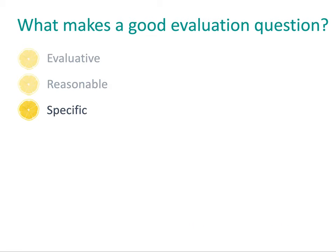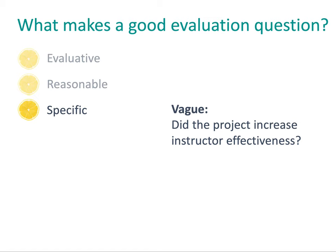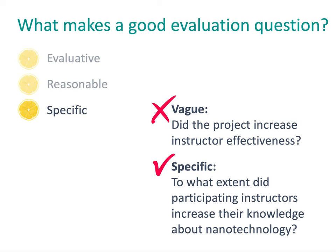Third, good evaluation questions should be specific. Questions should clearly identify what will be investigated in the evaluation. For example, if an evaluation question asks, 'Did the project increase instructor effectiveness?' we're left asking what instructor effectiveness means and how it's defined. We don't want vague questions stated in overly broad terms, as this introduces unnecessary confusion into an evaluation. Instead, we could be more specific and ask, 'To what extent did participating instructors increase their knowledge about nanotechnology?' — which more clearly states the expectation of project outcomes.